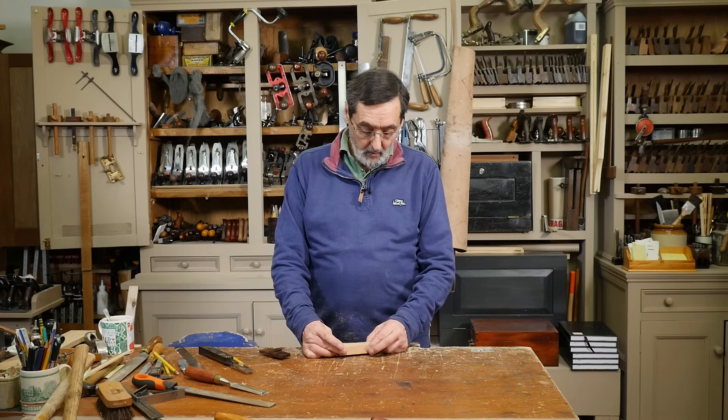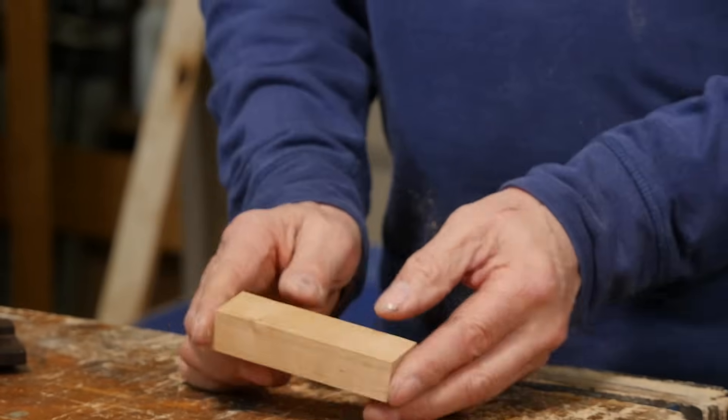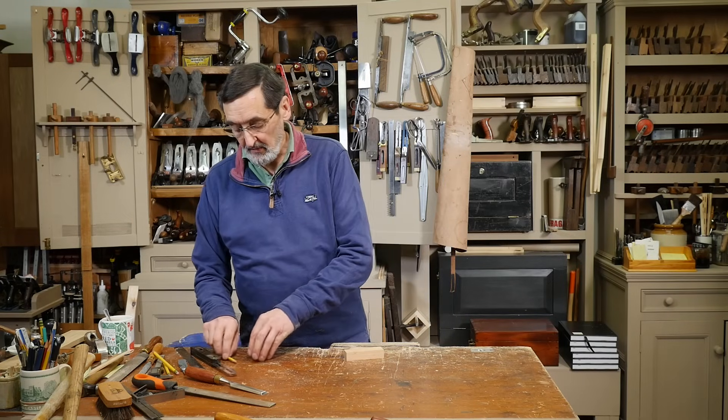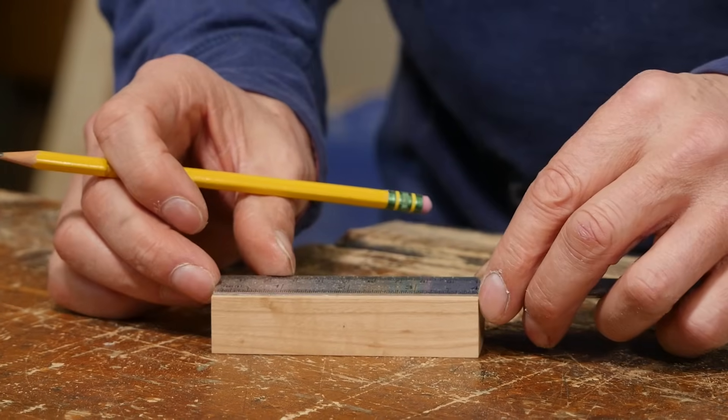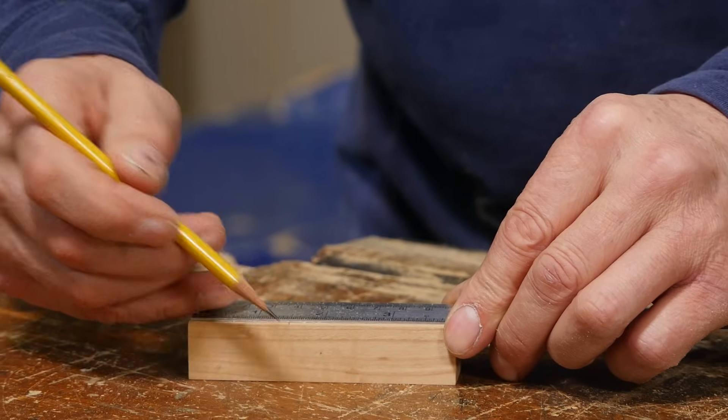I've got my blank. This is one and a quarter wide, seven-eighths thick, and four inches long. That's plenty of length for this. Usually dovetails are not very long. We're going to use a pencil to start with just to give us a mapping out. We're going to come one and a half from this end and one and a half from the opposite end.